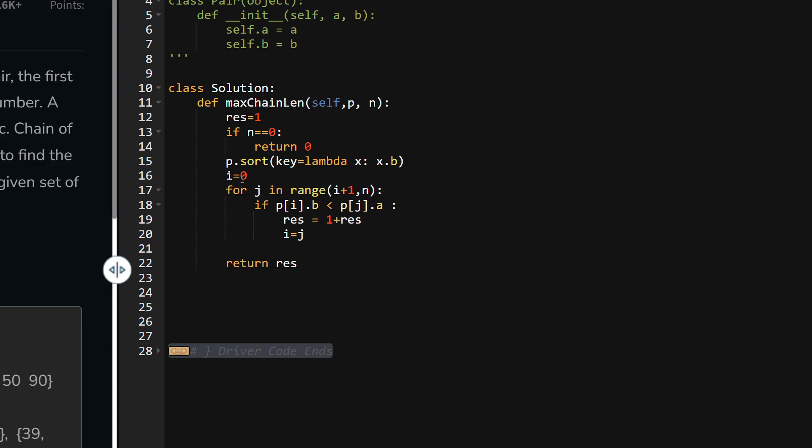After sorting by the B object, we have taken one variable i equals zero. This will be used to compare from the left side of the array, and the jth index will be used to compare from the right side of the array, so I will always be smaller than J. For j in range i plus one.